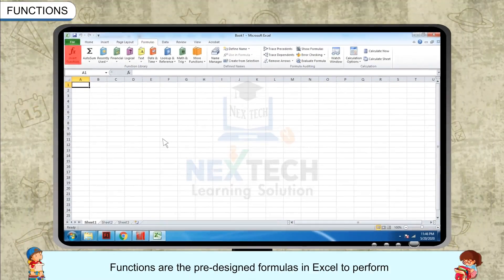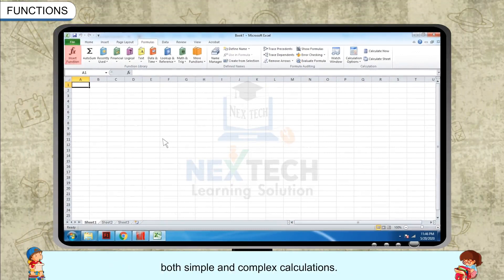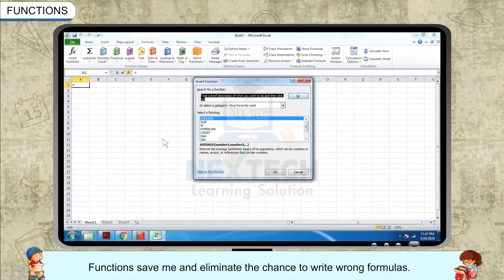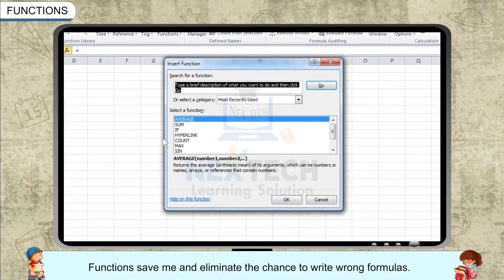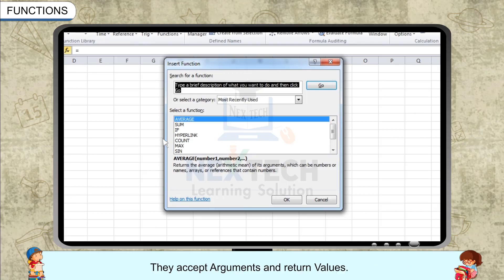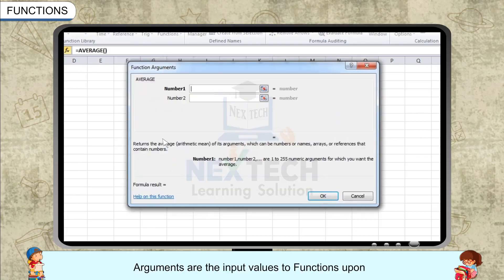Functions. Functions are pre-designed formulas in Excel to perform both simple and complex calculations. Functions save time and eliminate the chance to write wrong formulas. They accept arguments and return values. Arguments are the input values to functions.